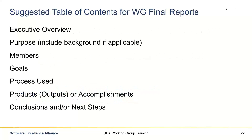The suggested table of contents: it's good to include a short executive overview. The purpose of the working group should be included. If you need background information, feel free to add that section. Who are the members of the working group? What were the goals? What processes were used? What were the outputs or accomplishments — what did the working group produce? And then what are the conclusions or next steps?